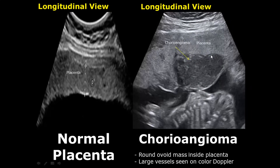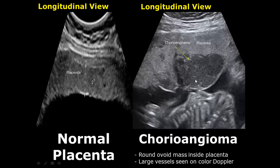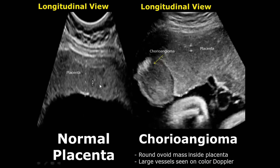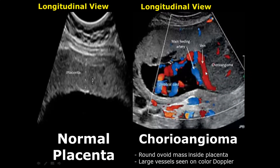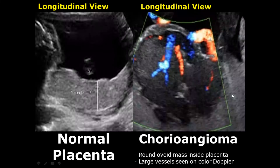One common benign tumor of the placenta is the chorioangioma. It appears as a round or ovoid mass inside the placenta; usually it is hypoechoic compared to the surrounding placental tissue. On color Doppler we will see large blood vessels supplying the mass — both arteries and veins — indicating a very large blood supply. Here is another Doppler image showing large vessels supplying the chorioangioma.